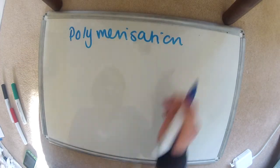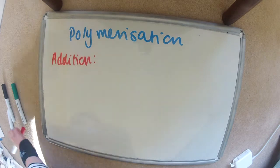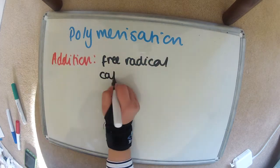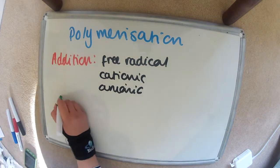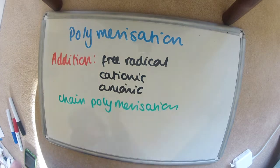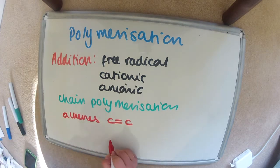Polymerization. There's two types. The first one is addition and there's three ways you can do this: free radical, cationic, and anionic. It is also known as chain polymerization and it usually uses alkenes. For example, PVC.